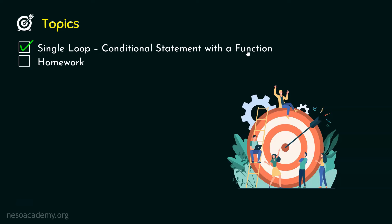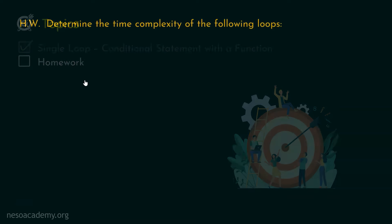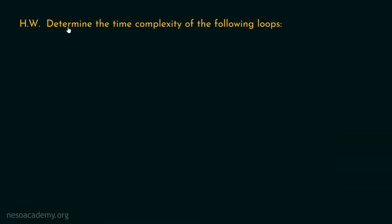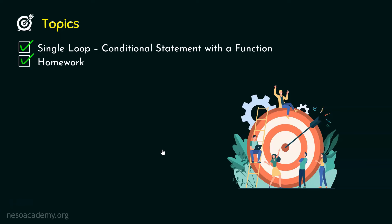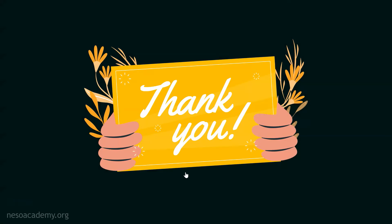We are done with the topic of Single Loop, Conditional Statement with a Function. Now let's proceed to the homework problem: determine the time complexity of the given loops. Try to solve this on your own and post your answers in the comment section. That's it for this lecture; see you in the next one.